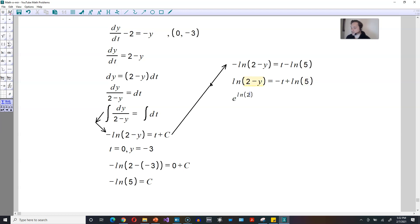Exponentiate both sides, so e to the ln of (2 - y) is equal to e to the (-t + ln(5)). Continue. On the left side, e and ln are inverses, they cancel. You just end up, therefore, with 2 - y. On the right side, it becomes e to the -t. And then here, what you can do is you can break this also into e to the ln of 5.